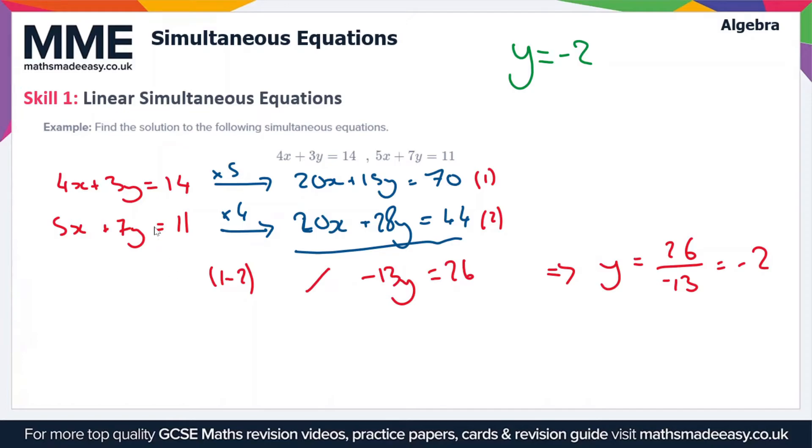So the next thing we do is we substitute in a value of y equals minus 2 to one of our equations and then solve it for x. So let's use the first one. We've got 4x plus 3y equals 14. So 4x plus 3 times minus 2 equals 14. So if we expand this bracket, then we get 4x.